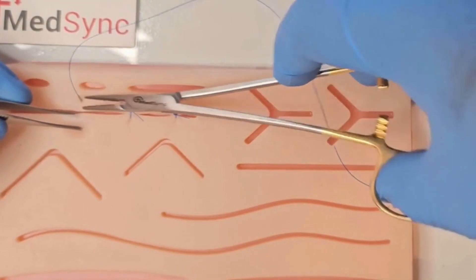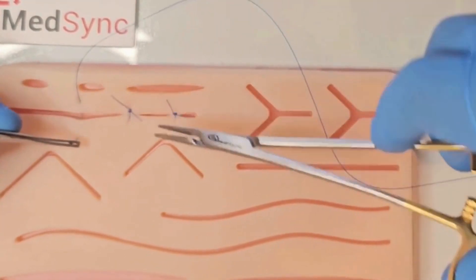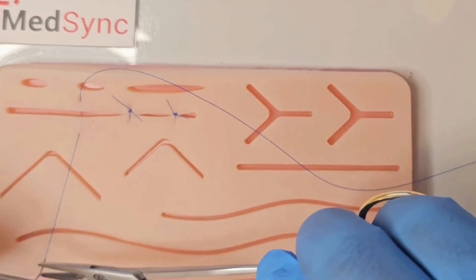Enter at 90 degrees. Pull the suture through. Lay the needle holder between the long and the short ends of suture.